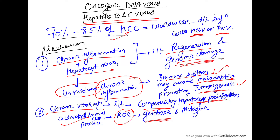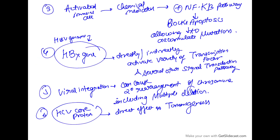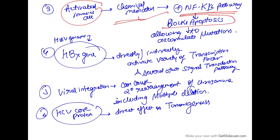Reactive oxygen species are genotoxic and mutagenic. Activated immune cells can also produce chemical mediators which stimulate the NF-κB pathway. This pathway is implicated in the majority of carcinomas. NF-κB is pro-survival — it stops apoptosis. Stimulating NF-κB blocks apoptosis and allows mutations to accumulate.